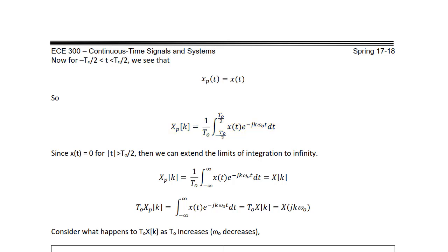Since x(t) equals zero for |t| greater than t₀ over 2, we can extend the limits of integration to infinity. So xp(k) equals one over t₀ times the integral from minus infinity to infinity of x(t) e^(−jkω₀t) dt, which we know equals x(k), the spectrum of x(t).